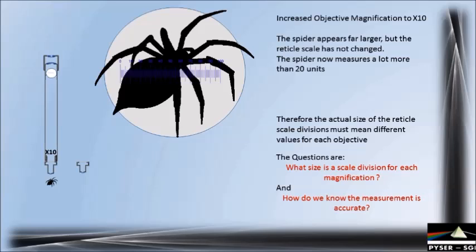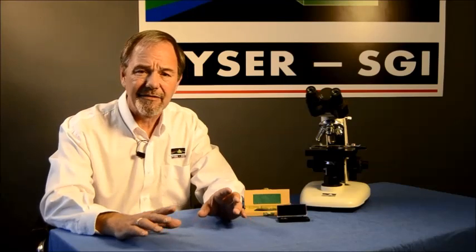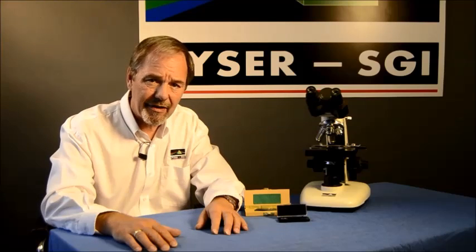So we must find out what actual size the reticule is measuring at each magnification and how we can be sure that the measurement is accurate. To reveal the calibration of our eyepiece reticule — what each of these 100 divisions is measuring — we need to compare the scale to another scale of a known length. To this end we use a stage micrometer, which is about the same size as a standard microscope slide but holds a small precision fine-lined scale image.